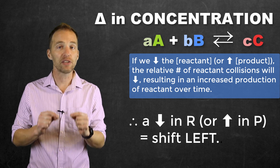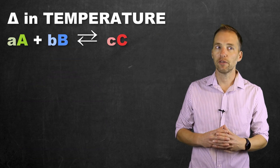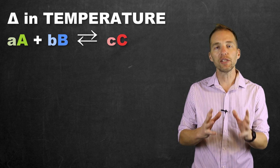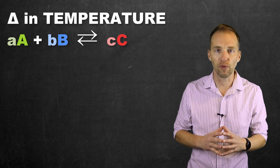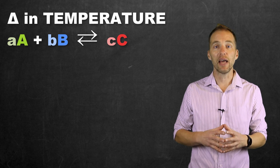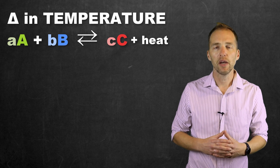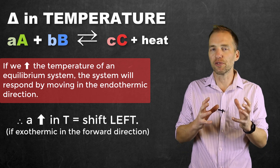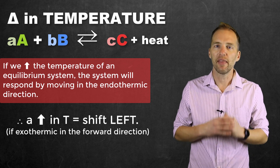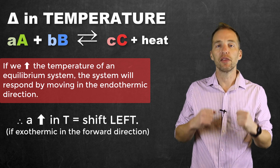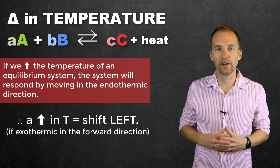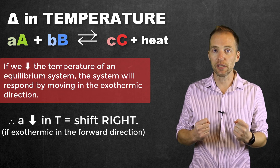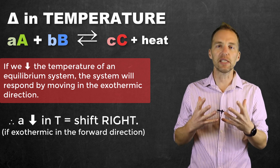It's worth noting that the value for K remains unchanged if temperature remains unchanged. If we change temperature, it depends on whether the reaction is endothermic or exothermic in the forward direction. For a reaction that is exothermic in the forward direction, energy is represented on the product side. Increasing temperature is like increasing heat on the product side — the system responds by using up that excess heat, decreasing energy available, and shifting to the left. Conversely, decreasing energy available causes the system to shift to the right.